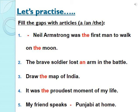Number 5: 'My friend speaks Punjabi at home.' No article is written before Punjabi because Punjabi is a name of a language. I hope you all have now understood when and where to use the articles and when not to use them. Read all the examples once again and get yourself thoroughly clear. That's all for the day. Enjoy learning. Thank you.